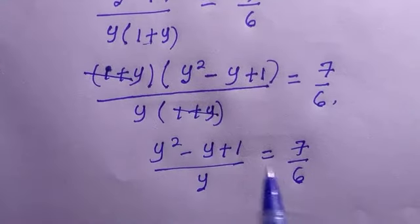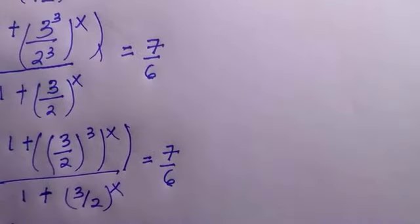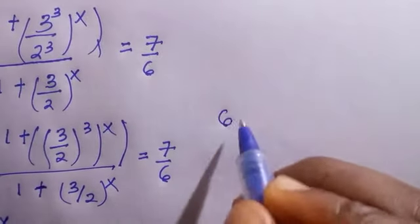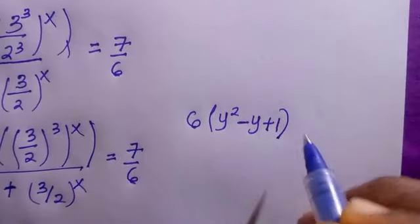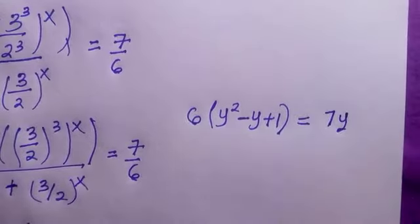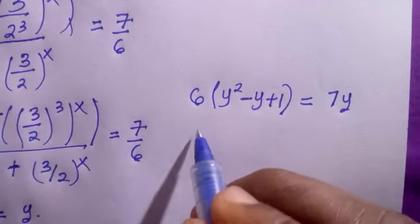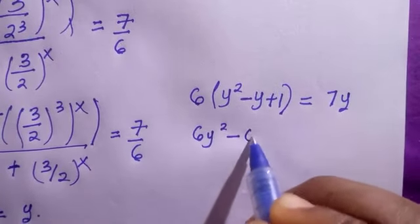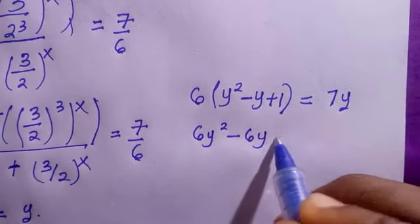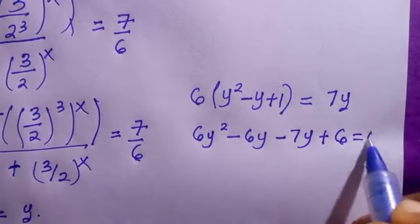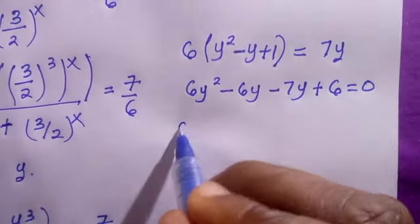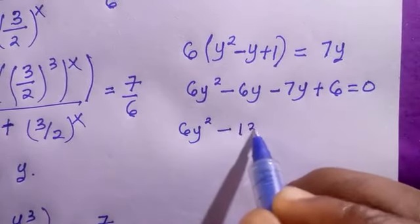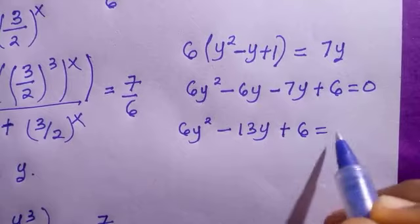If we cross-multiply, 6 multiplies y squared minus y plus 1, and 7 multiplies y. The result becomes 6y squared minus 6y plus 6 equals 7y. Transferring 7y across gives 6y squared minus 6y minus 7y plus 6 equals 0, which simplifies to 6y squared minus 13y plus 6 equals 0.